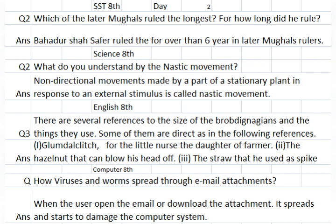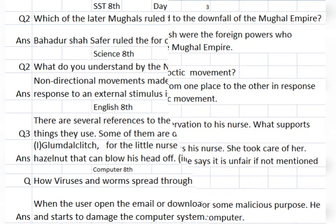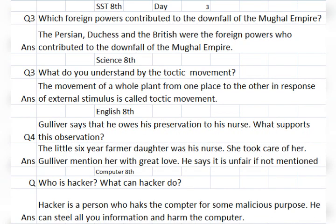Day 3, Class 8 SST: Which foreign powers contributed to the downfall of the Mughal Empire? The Persians, the Dutch, and the British were the foreign powers who contributed to the downfall of the Mughal Empire.